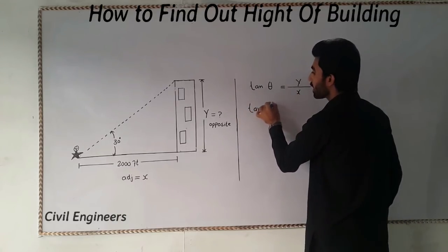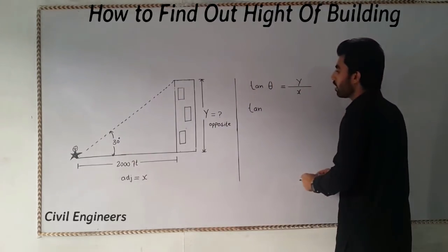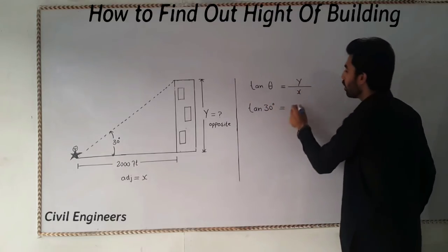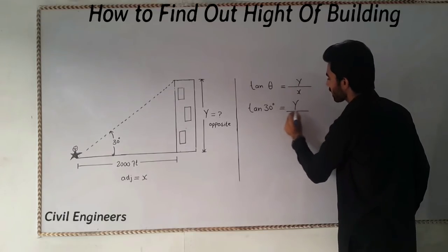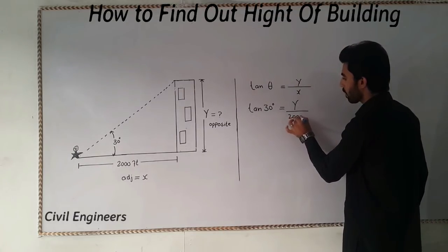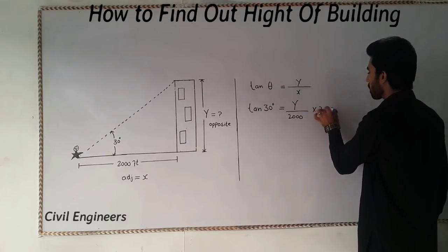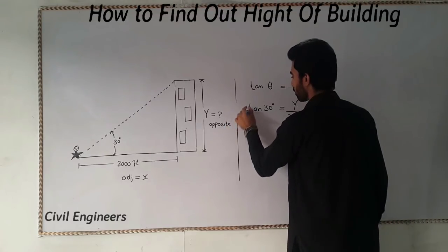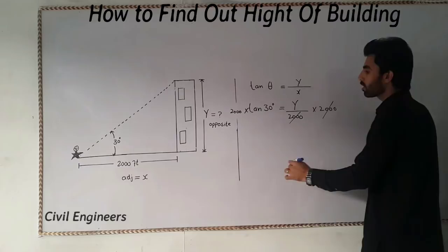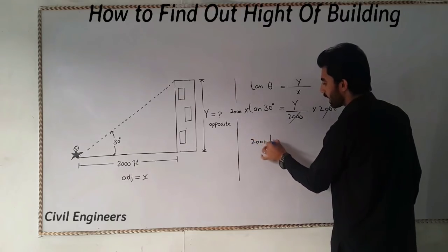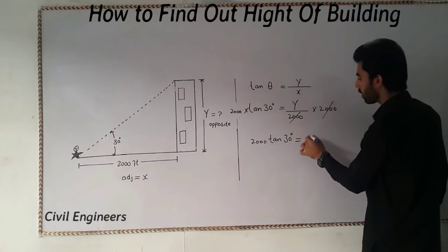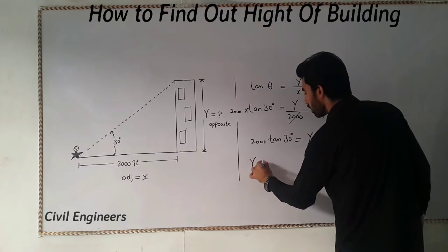I'll put in sine of 30 degrees, which equals Y divided by X. The X distance I have is 2,000 feet. Now just multiply both sides by 2,000 — the 2,000 on the right cancels out, so 2,000 times sine 30 degrees equals Y.